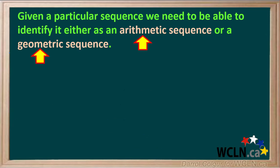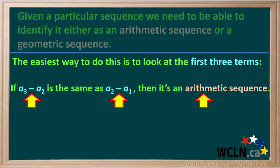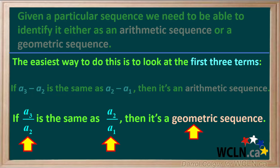Given a particular sequence, we need to be able to identify it either as an arithmetic sequence or a geometric sequence. There are other kinds of sequences, but here we'll concentrate on these two. The easiest way to do this is to look at the first three terms. If term a3 minus a2 is the same as term a2 minus a1, then it's an arithmetic sequence. But if the ratio of term a3 to a2 is the same as the ratio of term a2 to a1, then it's a geometric sequence.